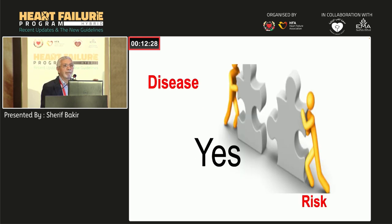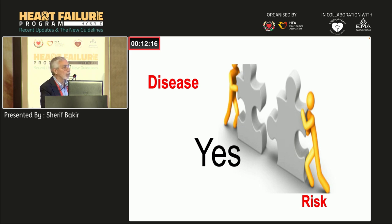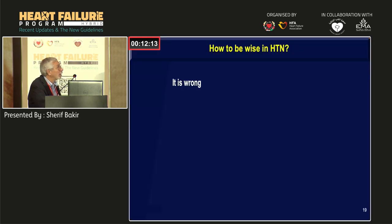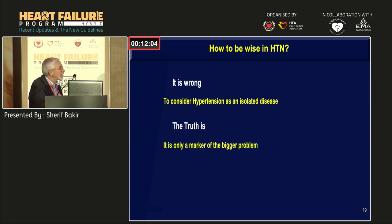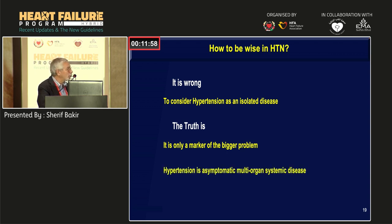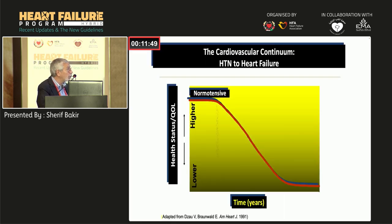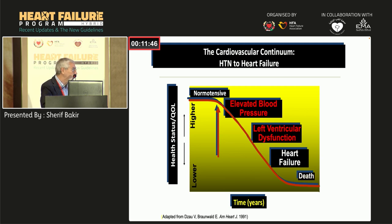So what exactly is hypertension? It is not a disease — it is a risk factor. If you put hypertension on top of any condition — ischemia, obesity, renal failure — it is like a joker card: it makes the situation much worse. It is wrong to consider hypertension as an isolated disease. It is only a marker of a bigger problem.